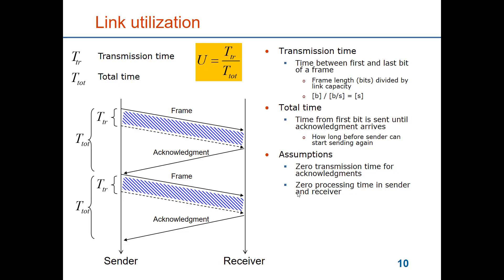U stands for utilization and is something we would like to maximize. You can get the utilization from 0 up to 100%, and we would like the flow control protocol to allow a utilization of 100%, so that if the receiver can handle all the frames that the sender can send, the link is fully utilized. It is only when the receiver needs to stop the sender that the link is not used, because the sender needs to wait for the receiver.